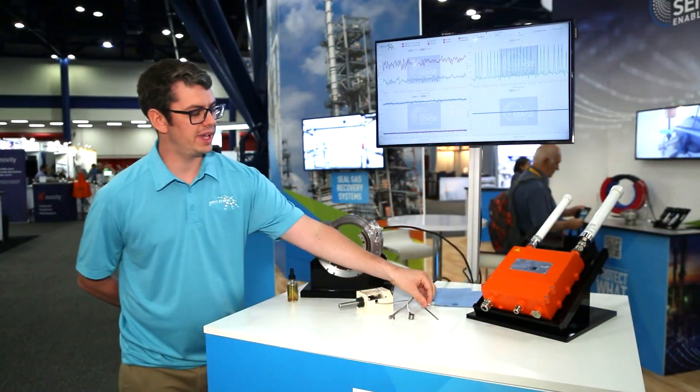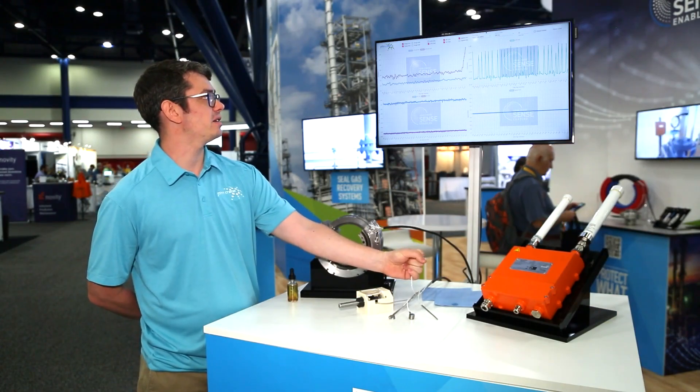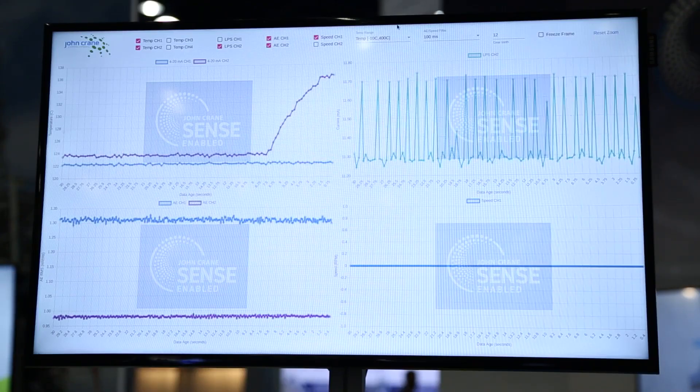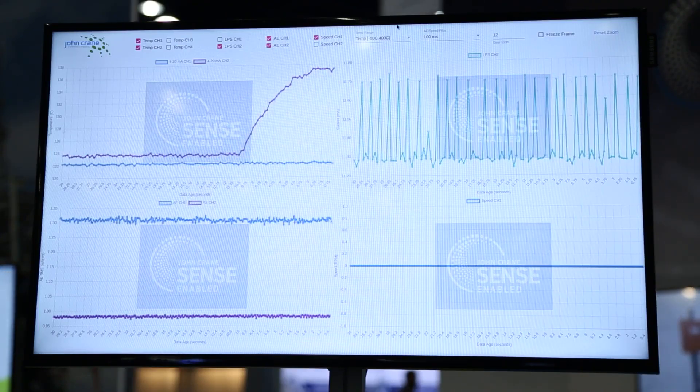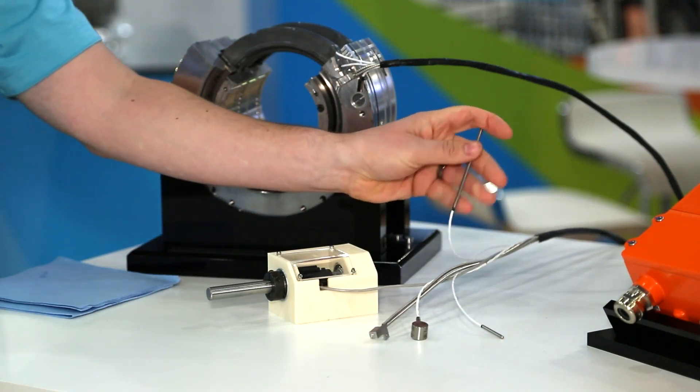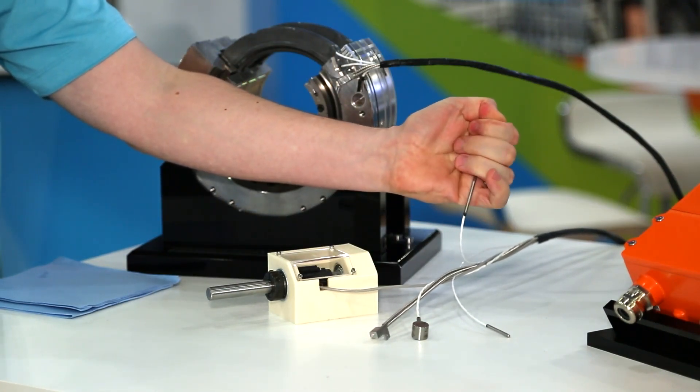So first of all we have the temperature sensors which I'll just hold in my hand. And as you can see the purple signal is rising there. Now I'll do the inboard temperature sensor. This is the blue line in the top left graph.